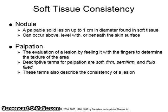It is important to note the soft tissue consistency. Consistency is evaluated by palpation, which means that you feel it with your fingers to determine the texture of the area. Descriptive terms for palpation are soft, firm, semi-firm, and fluid-filled. These terms also describe the consistency of a lesion. A nodule is a palpable, solid lesion up to one centimeter in diameter, found in soft tissue. It can occur above, level with, or beneath the surface of the skin.